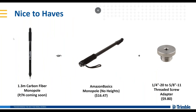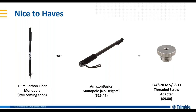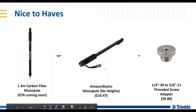A nice-to-have is the monopole. This is a pole that Trimble offers, currently only available on our CEC division, though I have set it up so it will be available for survey and GIS customers as well. Once I have the part number, I'll get that posted so they can contact our dealers. It's a really nice adjustable pole at 1.3 meters, and depending on how tall you are, you can adjust the height to view Site Vision. I personally recommend the monopole.